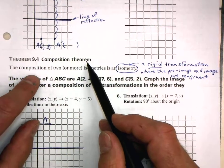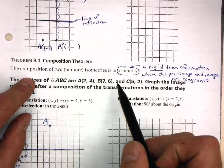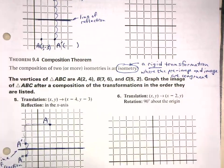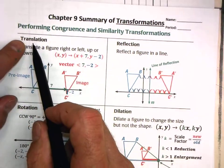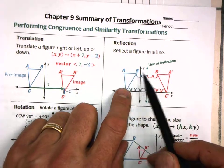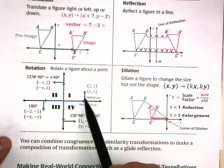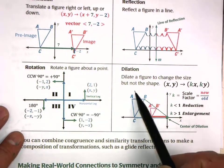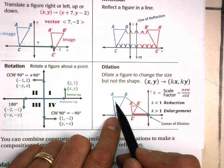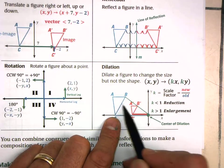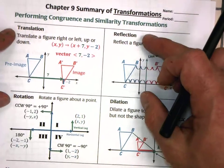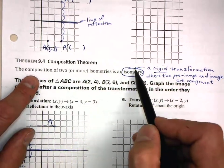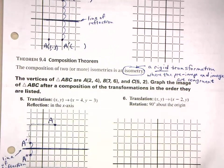The theorem here is that if we have a composition of two or more isometries — a translation is an isometry, a reflection is an isometry, and a rotation is an isometry — but a dilation is not an isometry, because the pre-image and the image are not congruent with each other. So if you use any combination of translations, reflections, and rotations, then the overall composition will also be an isometry.